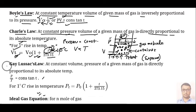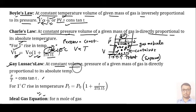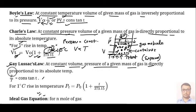After that, we have the next law called Gay-Lussac's law. According to this law, at constant volume, pressure of a given mass of gas is directly proportional to its absolute temperature.